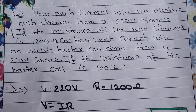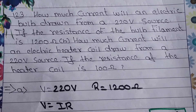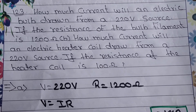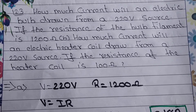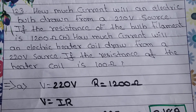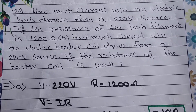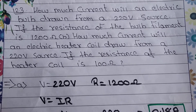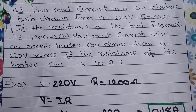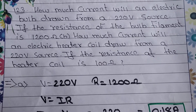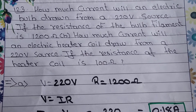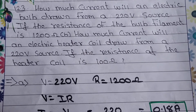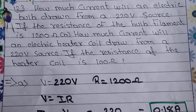Let's start question number 12.3. In the question, what is given? How much current will an electric bulb draw from a 220 volt source if the resistance of the bulb filament is 1200 ohm? And how much current will an electric heater coil draw from a 220 volt source if the resistance of the heater coil is 100 ohm?